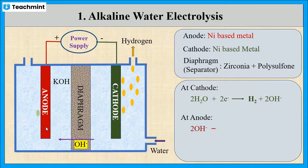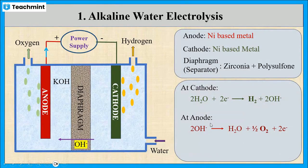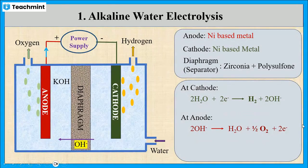At anode, the hydroxyl ions are converted into oxygen gas by the liberation of electrons. At anode, this OH⁻ ion is converted into water molecules and oxygen gas along with the liberation of electrons.